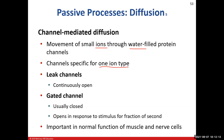There are two types of channels: leak channels, which are always open — like a 7-Eleven, open 24/7 — and gated channels. Gated channels, as the name implies, have a gate. These gates are usually closed and open in response to a certain stimulus, and when they do open they're only open for a very brief moment. We'll learn more about these when we discuss muscle and nerve cells in chapters 10 and 12.